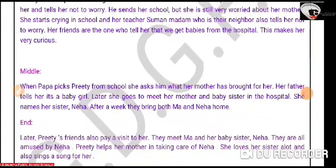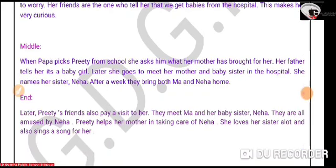In the middle, when Papa picks Preeti from school, she asks him what her mother has brought for her. Her father replies by telling her that it's a baby girl. Later, she goes to meet her mother and baby sister in the hospital. She names her sister Neha. After a week, they bring both Maa and Neha home. In the end, Preeti's friends also pay a visit. They meet Maa and baby sister Neha, and are all amused by her. Preeti helps her mother in taking care of Neha, loves her sister a lot, and also sings a song for her.